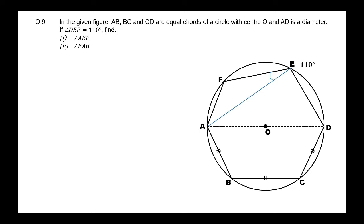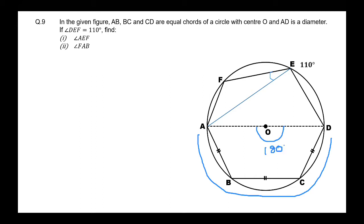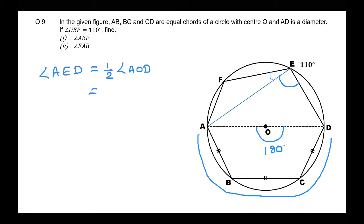Using our properties discussed in the last session: if we consider this arc which is a semicircle, then this angle is 180 degrees. And if this angle is 180 degrees, then angle AED is half of angle AOD, by the property that the angle subtended at the center is double the angle in the remaining part. So angle AED will be 90 degrees.